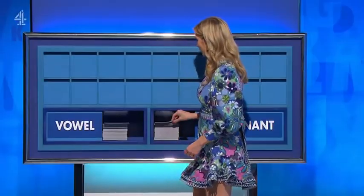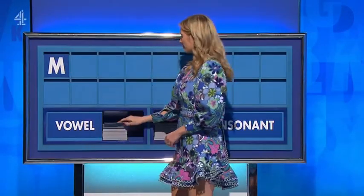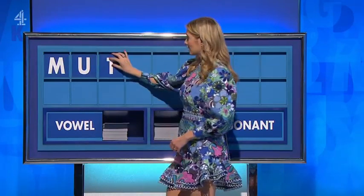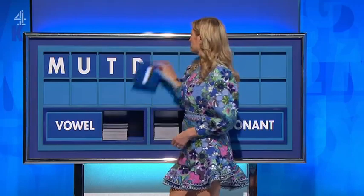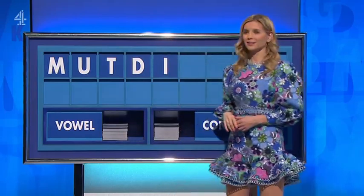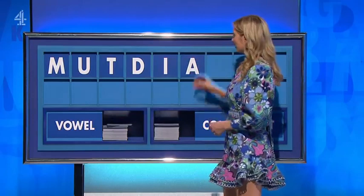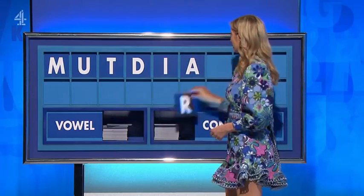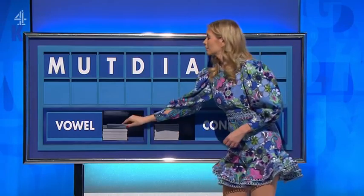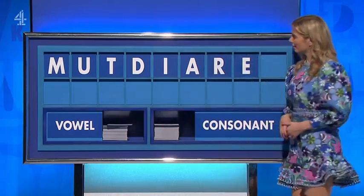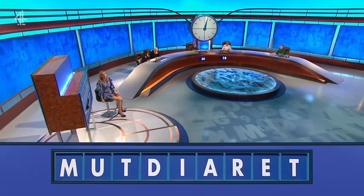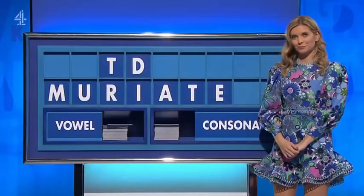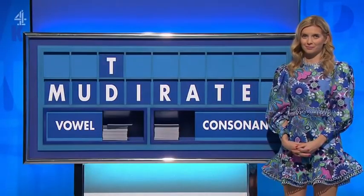Thank you, Adrian. M. And a vowel: U. A consonant: T. And another: D. A vowel: I. And another: A. A consonant: R. A vowel: E. And a consonant, please — lastly: T. That's it. New Deer, which is the governor of peace.